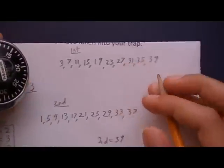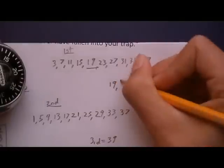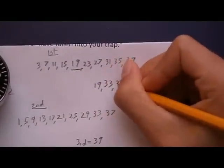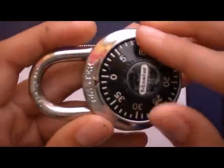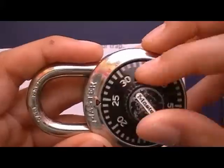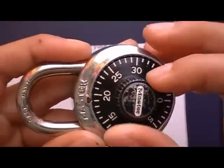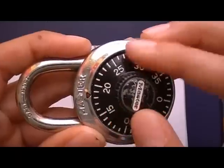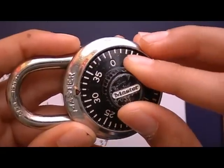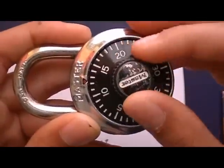So I tried this earlier, and my combination was 19, this number, 33, and of course 39. If we try this, turn it clockwise, we clear it, land on 19, and turn it counterclockwise, past the second number, and land on it the second time, in this case 33, and we turn it clockwise to 39.